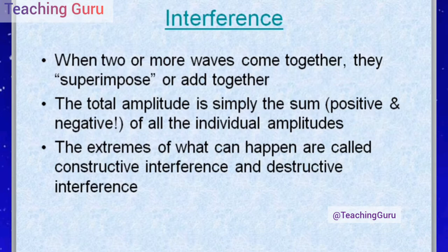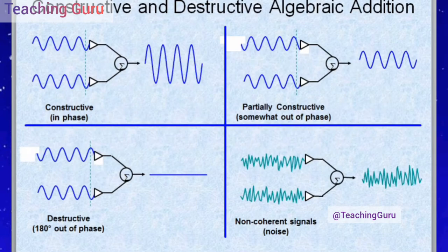Next is interference. When two or more waves come together, they superimpose or add together — the total amplitude is simply the sum of all individual amplitudes. The extremes of what can happen are called constructive interference and destructive interference. When two waves come together in the same phase, they form a larger wave (constructive interference). When destructive waves combine, the result is a flat line. Partially constructive and non-coherent signals produce noise.